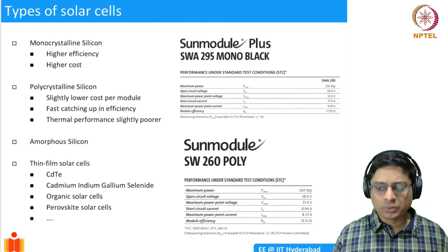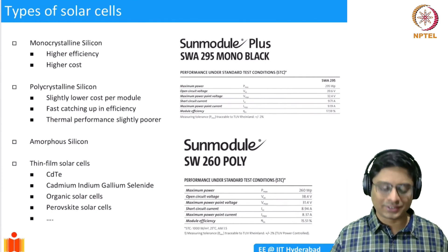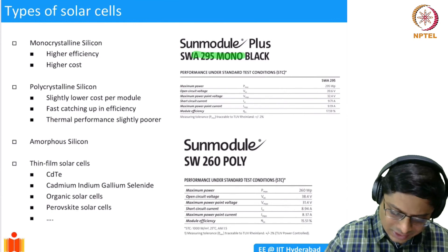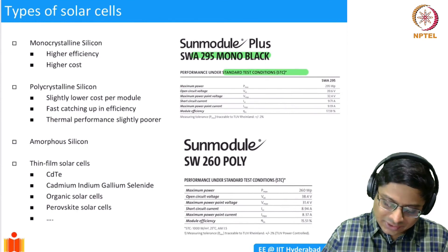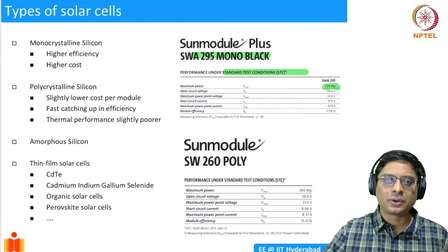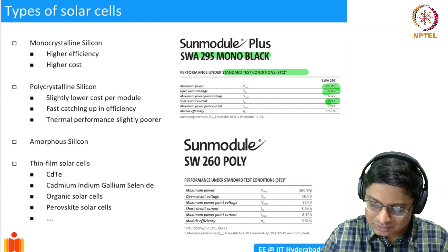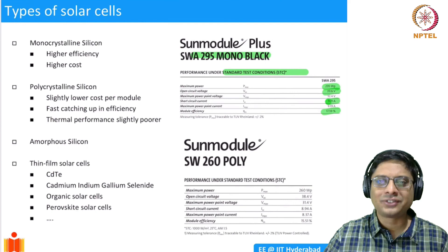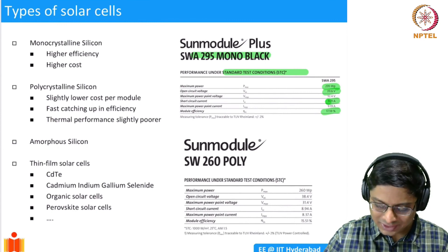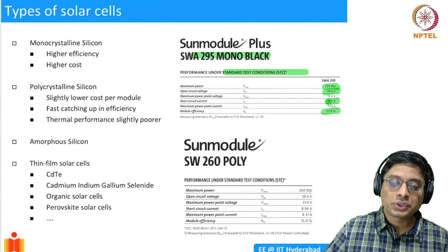To close, let me show data sheets for a couple of real solar cells. This monocrystalline Sun Module panel under standard test conditions delivers a maximum power of 295 watts, with an open circuit voltage of 39.6 V and short circuit current of 9.71 A, giving a module efficiency of about 18%. You now have the tools to analyze these parameters — open circuit voltage, maximum power point, and efficiency — for your own designs.